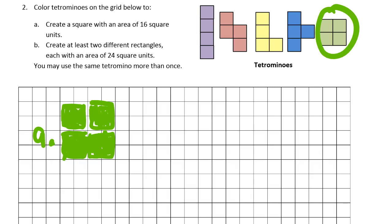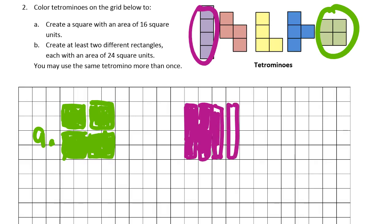And then it says create two different rectangles each with an area of 24 square units. Well, let's see. I have this guy here is four. And I know six fours is 24. So I could just put six of those together to make a rectangle. That would be one way to do it. That's one of them. That would be one, two, three, four. All right. And then now we need six columns of four to do it. One, two, three, four, five, six. That's one of them.